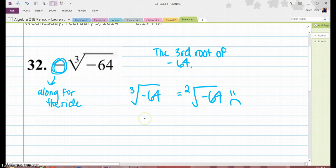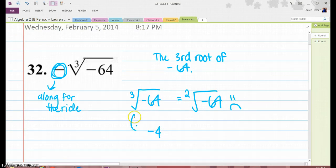The third root of negative 64 would be negative 4, because negative 4 times negative 4 times negative 4 equals negative 64.